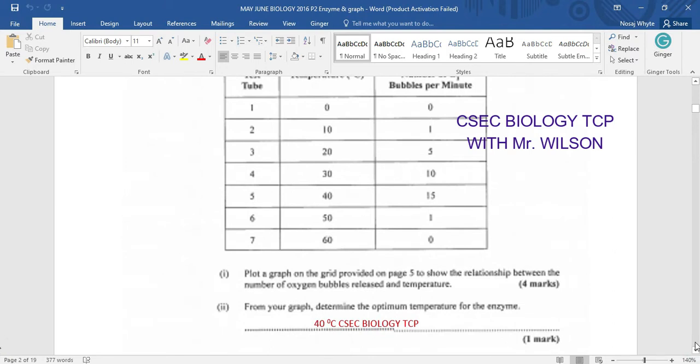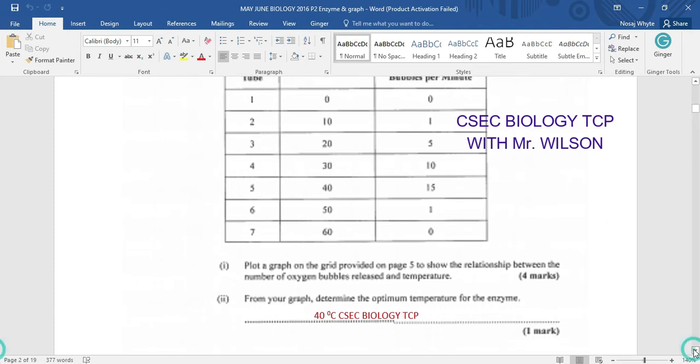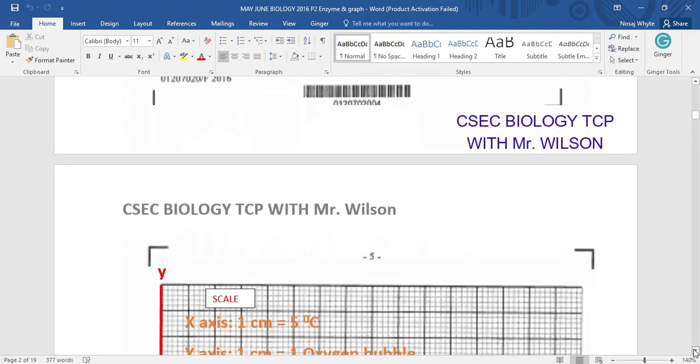Let us look at some questions here. Now we're supposed to plot the graph on a grid and that grid is provided on page five to show the relationship between the number of oxygen bubbles released and of course temperature. Now for your graph, we're supposed to determine the optimum temperature of the enzyme. Now your optimum temperature is going to be that point where the enzymes are most useful, are most efficient and this of course is going to be 40 degrees Celsius and that would have been at 15 bubbles high. That's where we found our optimum temperature. And I'm going to be showing you that in the graph as soon as we would have constructed the graph.